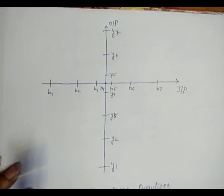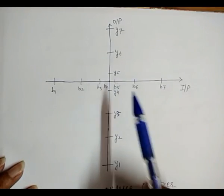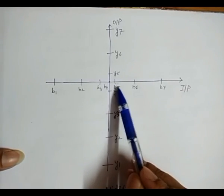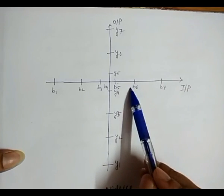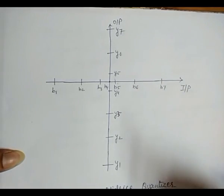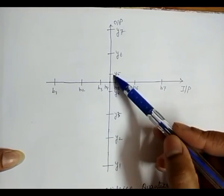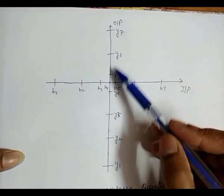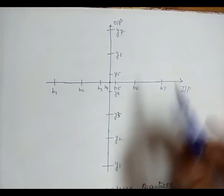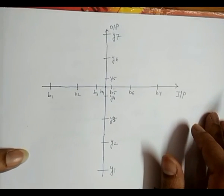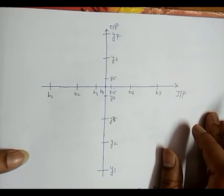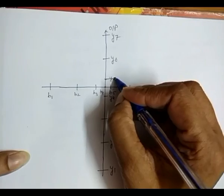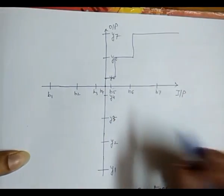This is the non-uniform mid-rise quantizer. The intervals near the origin have a smaller interval, meaning the step size is smaller. And as we move away from the origin, the step size between the intervals increases. Similarly, for the output, the interval near the origin has a small step size, and as we move away from the origin, the interval size becomes larger. In a mid-rise quantizer, the output does not include the zero value.